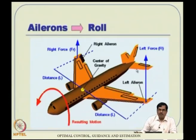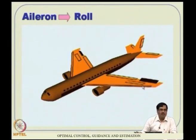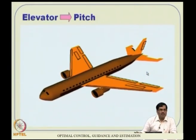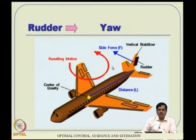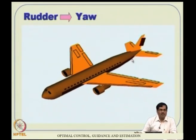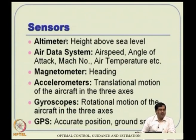To summarize: aileron deflection creates rolling, elevator deflection creates pitching, and rudder deflection creates yawing. Modern aircraft require a rich set of sensors for automatic control. Sensors include an altimeter for height, an air data system providing airspeed, angle of attack, Mach number and air temperature, and a magnetometer for heading. Modern aircraft are very sensor-rich — the same information can be obtained from multiple sensors giving sensor redundancy and data fusion capability for improved accuracy.